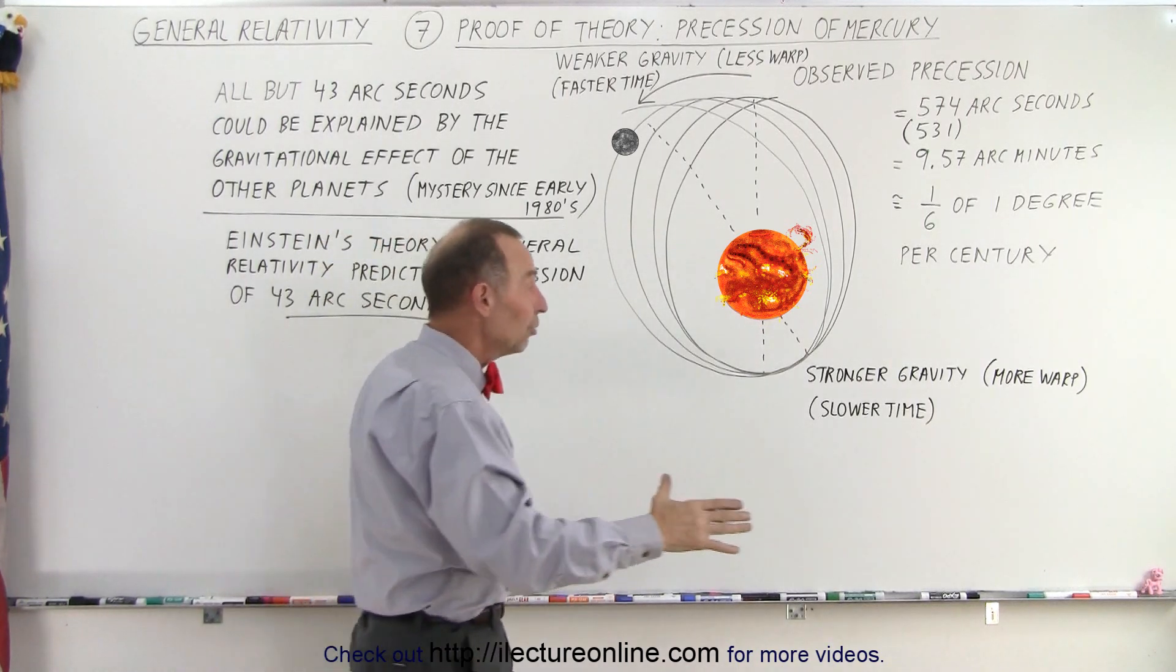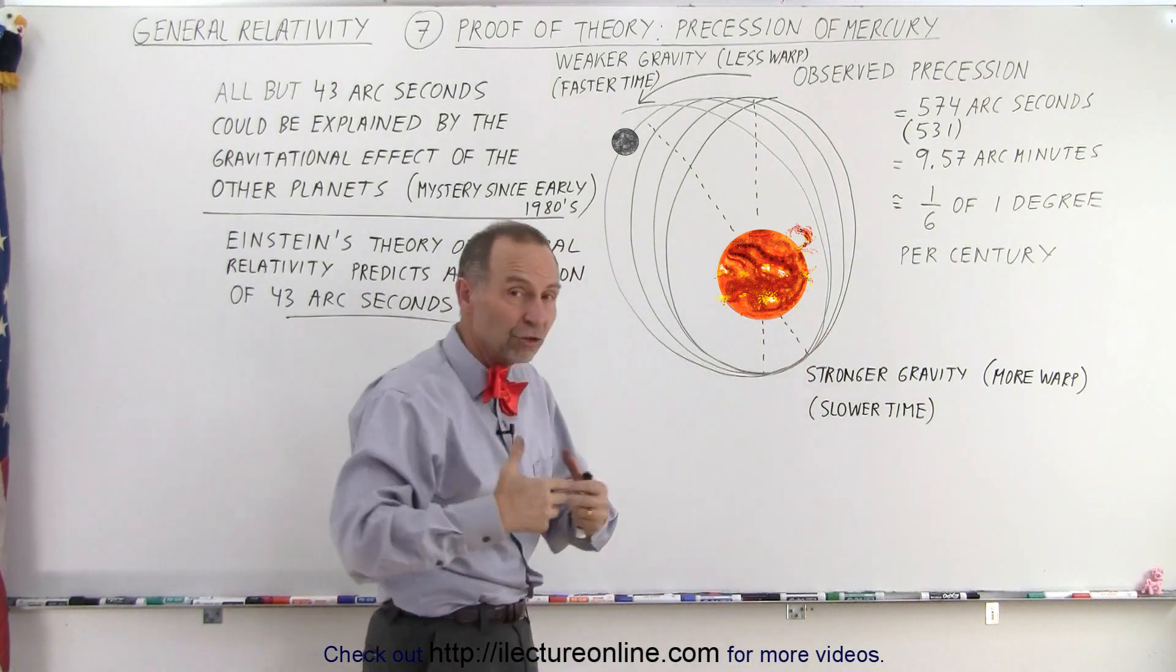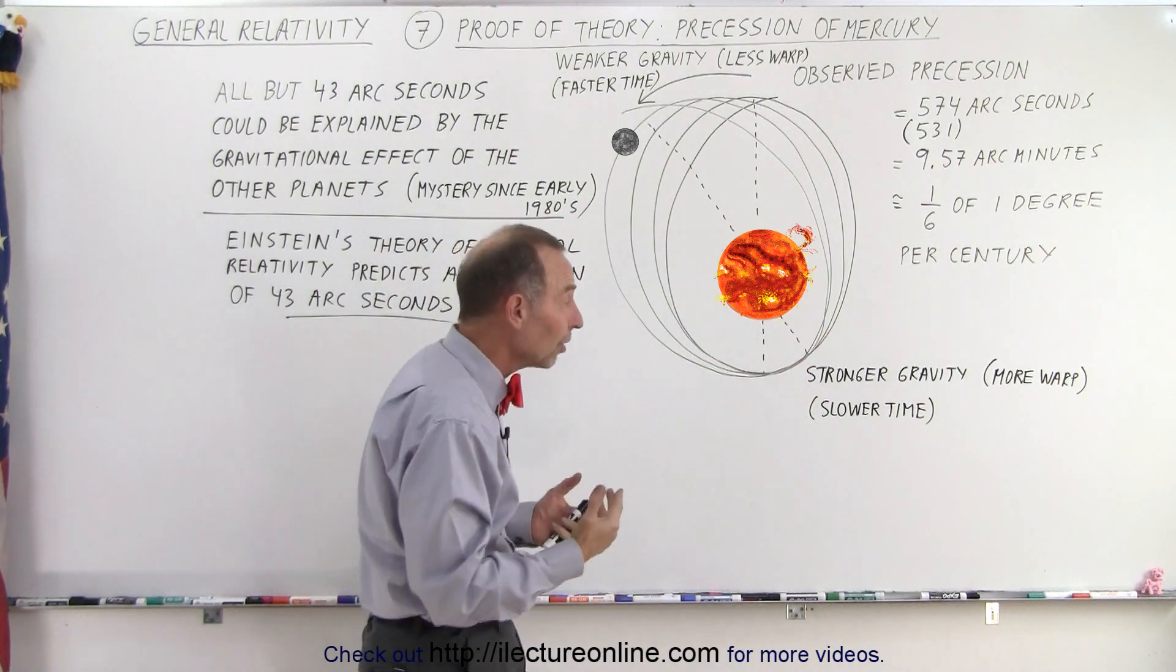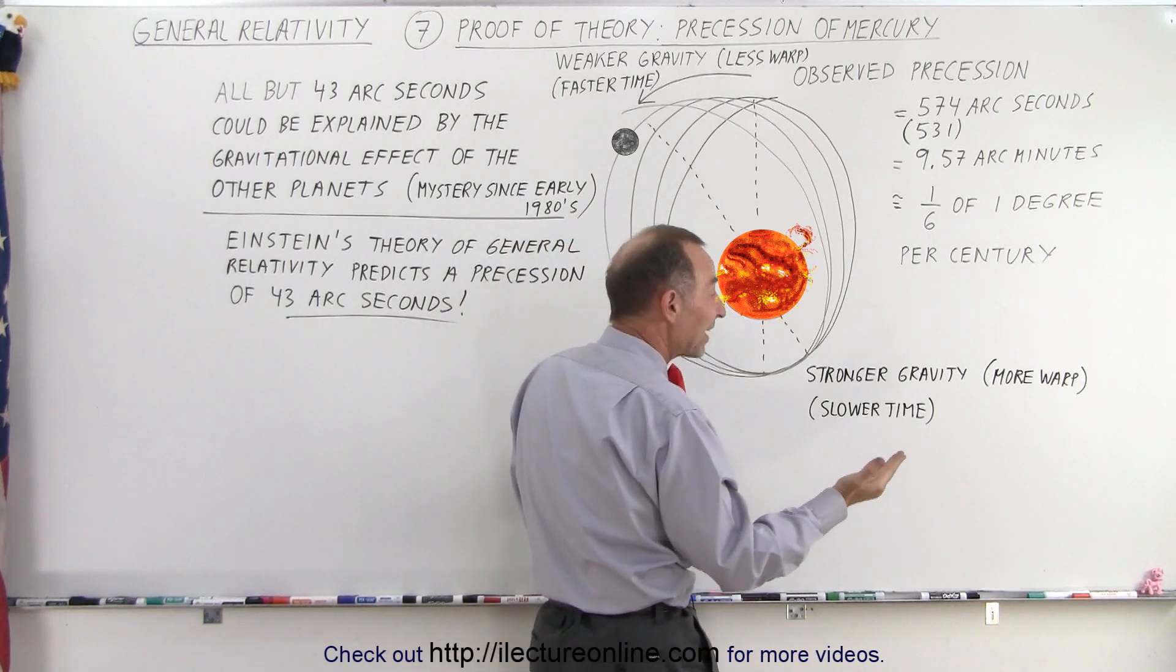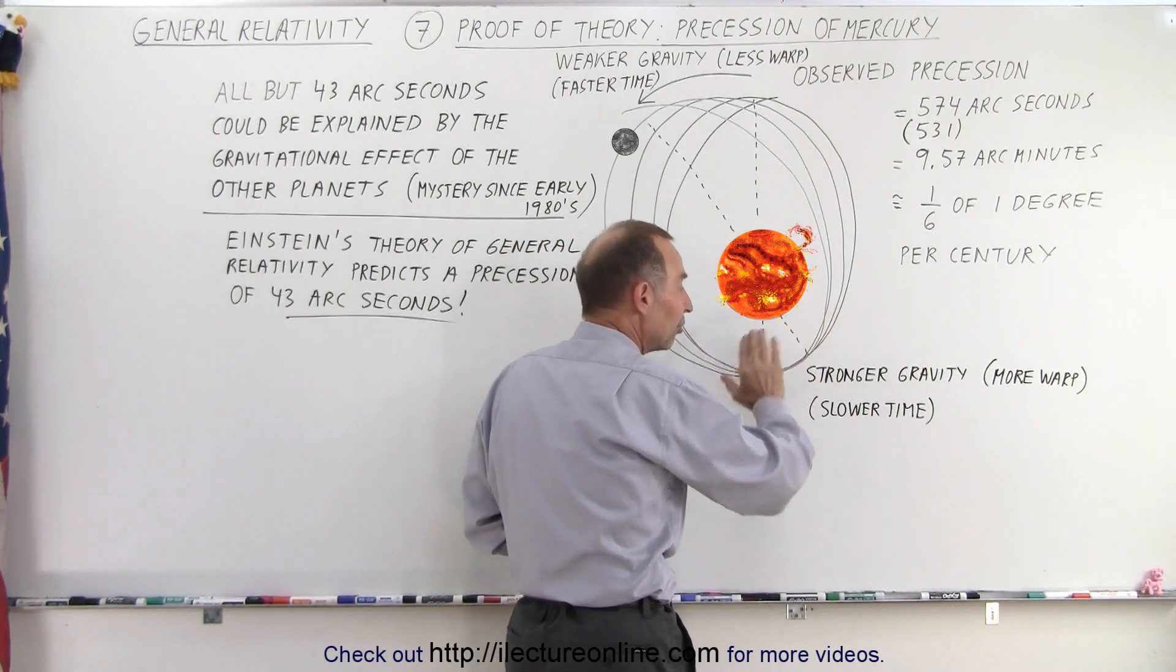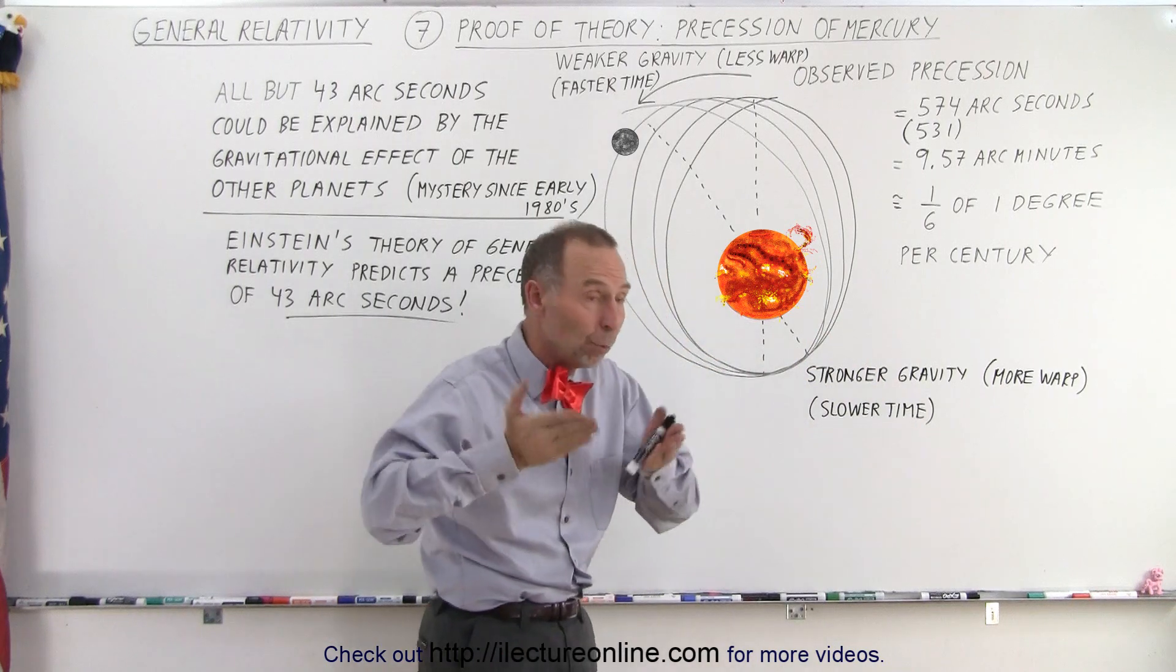Not only is gravity stronger as you get closer, and therefore there's a greater warp in space, but the warp in space also affects time. When you're in a stronger gravitational field, when space is warped more, time slows down.